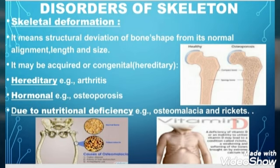Skeletal deformation, as its name indicates, is the distortion of bones or skeleton. We can define it as the structural deviation of the bone shape from its normal alignment, length, and size. This means that when the bone shape, length, or size changes, the bone deforms — that is skeletal deformation.